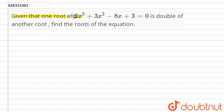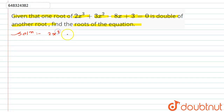The question is: given that one root of 2x³ + 3x² - 8x + 3 is double of another root, we have to find the roots of the equation. So in this question we have the equation 2x³ + 3x² - 8x + 3 = 0, and one root is double of another root.